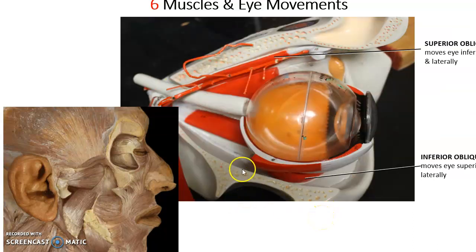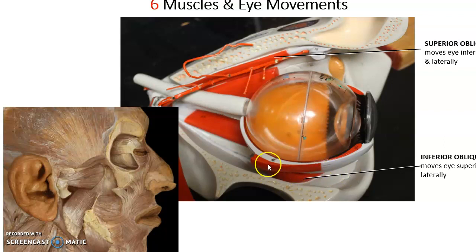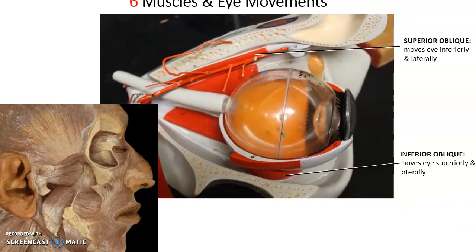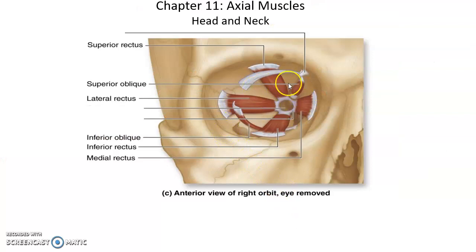The two oblique muscles move the eye in the opposite direction from where they are located. The superior oblique originates in the back of the orbit, passes through a piece of connective tissue, then connects to the back of the eye — making a U-turn — and moves the eye inferiorly and a little laterally. The inferior oblique originates in the front of the orbit and inserts into the back of the eye, moving it superiorly and a little laterally. Five of the six muscles originate in the back of the orbit; the inferior oblique is the exception.